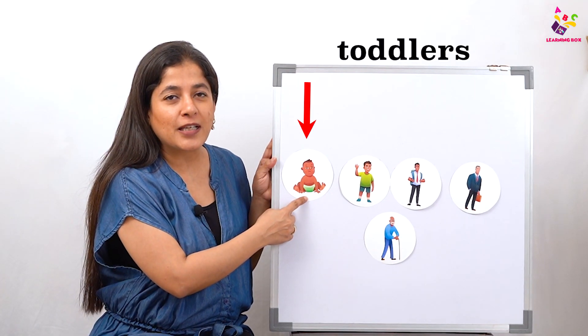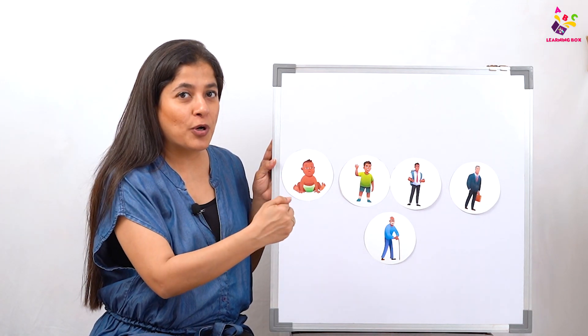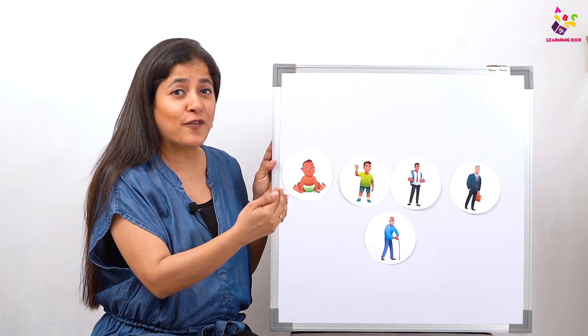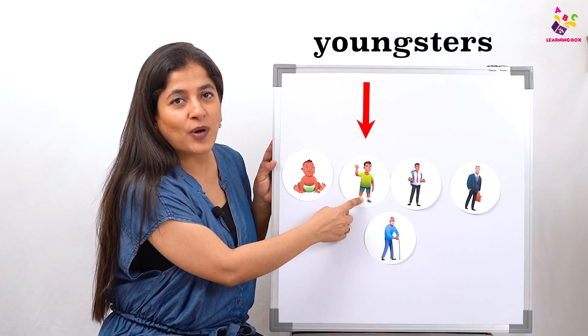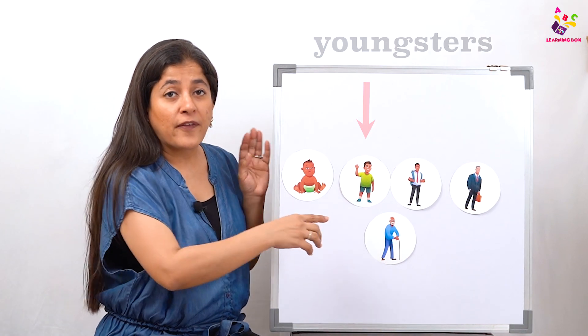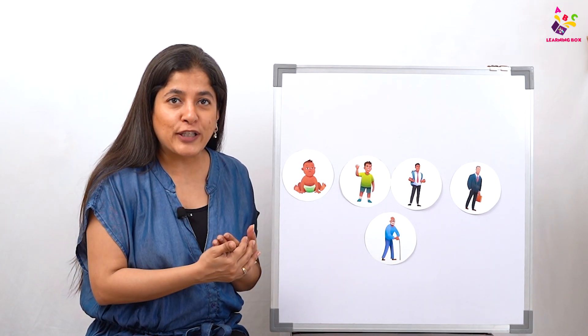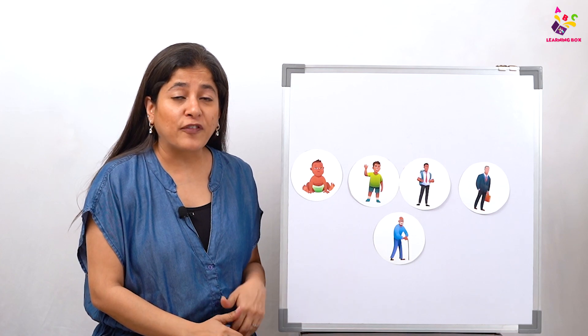As we grow older, we start going to school, we start making friends. We are in fifth, sixth, seventh, eighth—we are youngsters. Then we finish school, we go to college. After the age of 12, when we turn 13, we become teenagers.